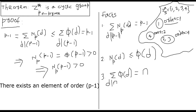Remember, np(d) is a function we defined earlier in the previous segments. np(d) denotes how many elements in your group have order d. We also learned that the order of each group element divides the order of the group. Summing all np(d) over all d gives you the order of the group, exactly like the example I showed for this theorem.